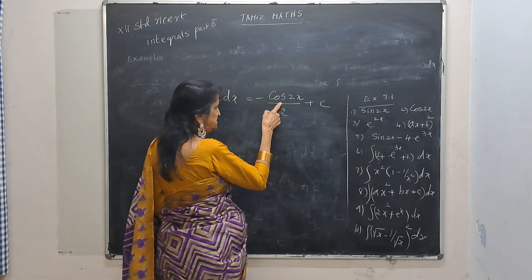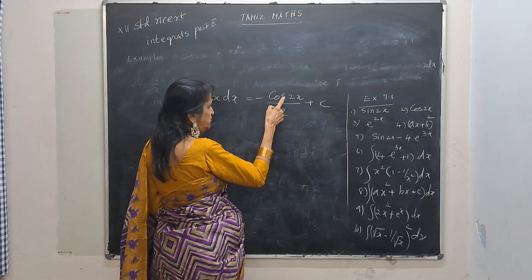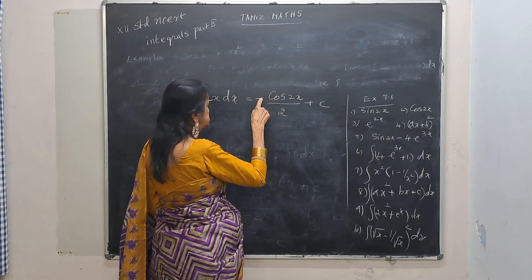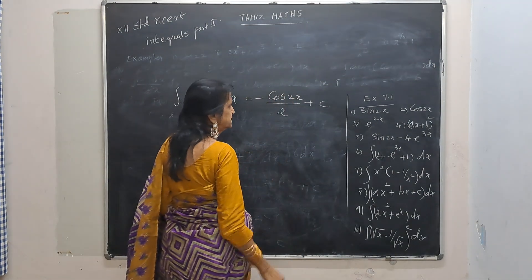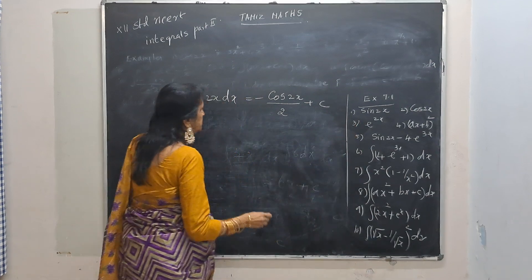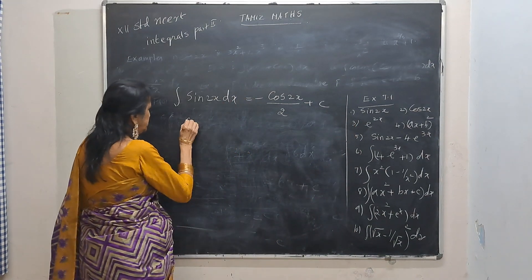Differentiate this: derivative of cos is minus sin, with this minus it will become plus, and 2 will be extra — so divide by 2. This is the answer for this one.